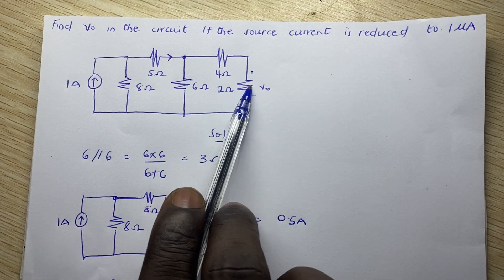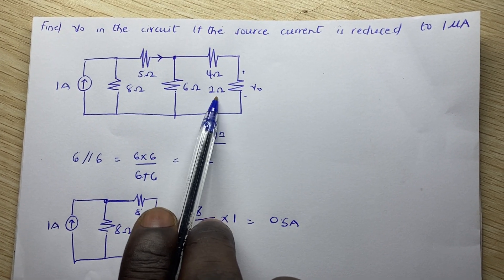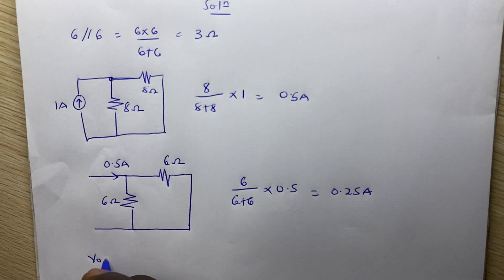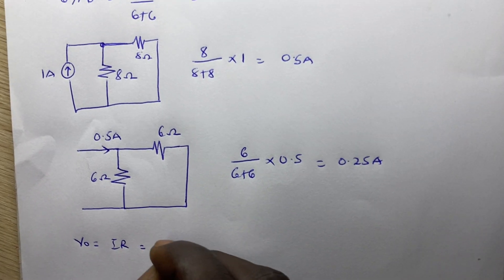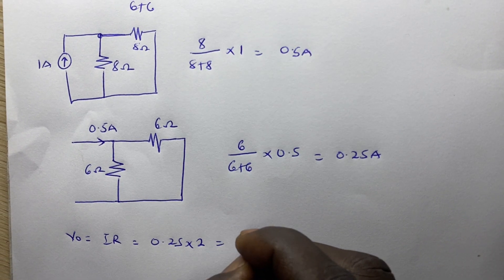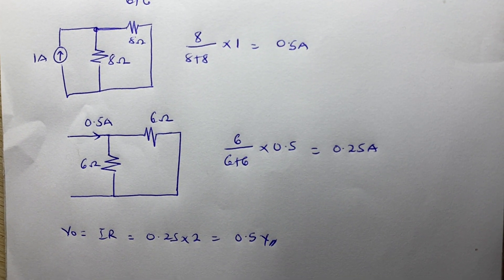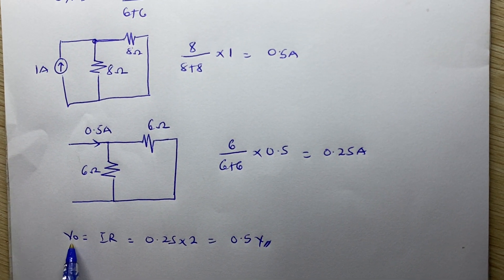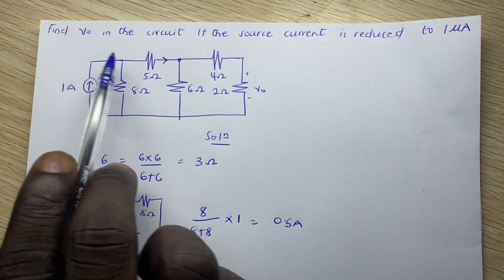The voltage drop across the 2 ohm resistor is the current through it multiplied by the resistance. So v_naught = i × R = 0.25 A × 2 Ω = 0.5 volts. This v_naught of 0.5 volts is the result of a 1 amp source current.